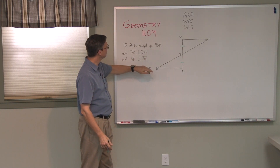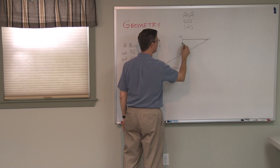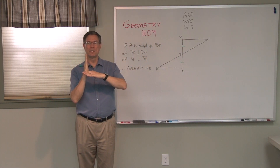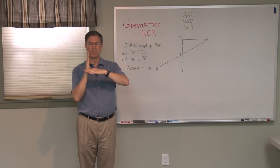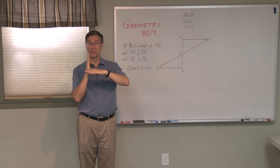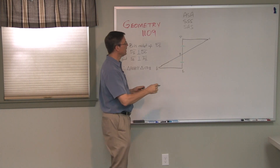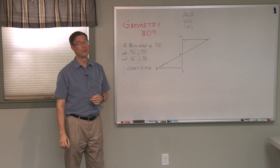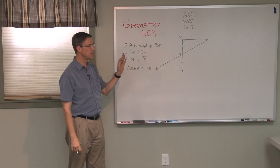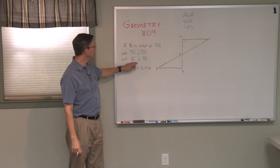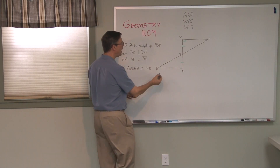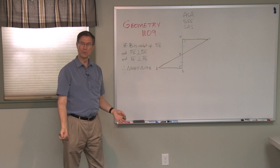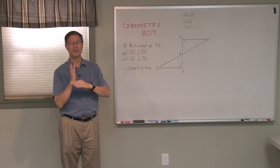DE is perpendicular to DC. What do we know about lines that are perpendicular? They form a right angle. So we put a little box there — that's the code in geometry that it is a 90-degree right angle. We also know that DE is perpendicular to AE, so that angle is also a right angle, because they're two perpendicular lines.